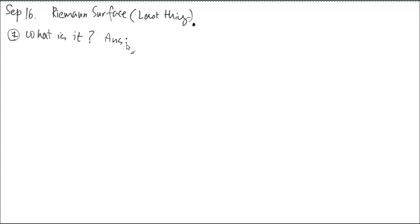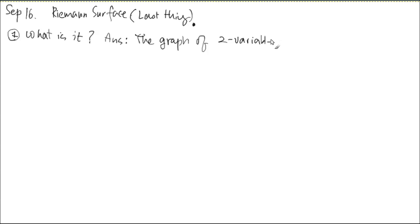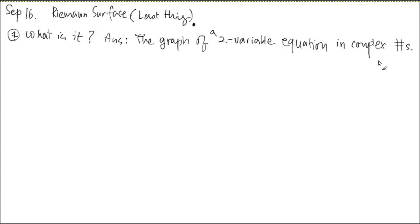Here's an answer. There's a fancy, very abstract answer that developed later. But what I'm about to describe is concrete and hard enough that you'll be able to understand. A Riemann surface is a graph of a two-variable equation in complex numbers.